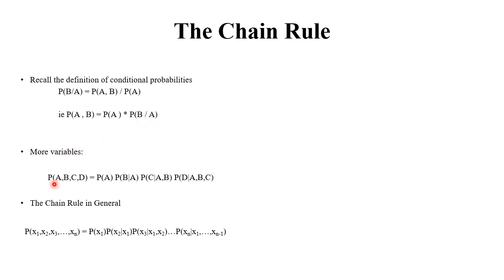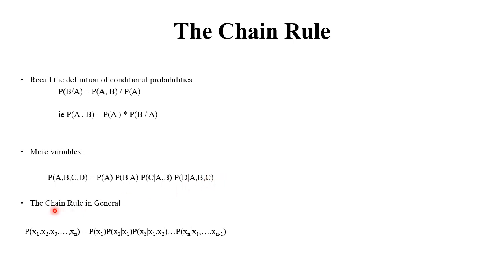If we have more variables — probability of A, B, C, D — we can write this as P(A) times P(B | A), then given A and B, the probability of C given A, B, and then D given A, B, C. In general, the joint probability rule can be written as the product of each variable conditioned on all previous variables.